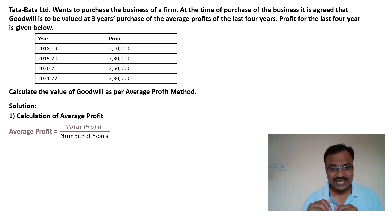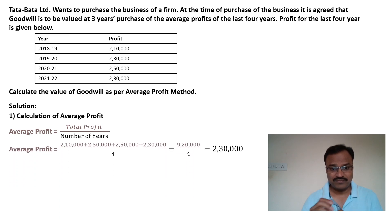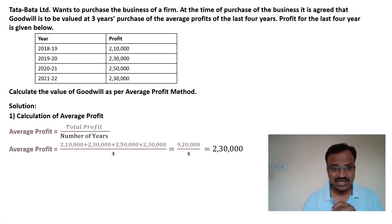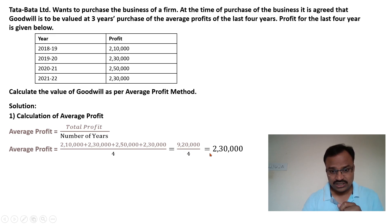In this case profit is given for four years, so we add the profits of all four years and divide by four. The profits from 2018-19 to 2021-22 total 9,20,000. Dividing by four gives us an average profit of 2,30,000.